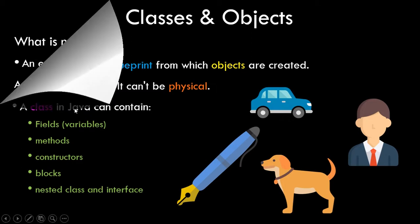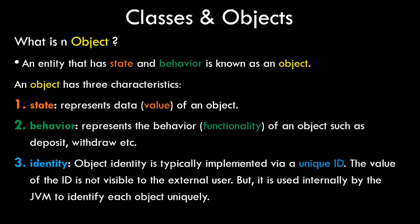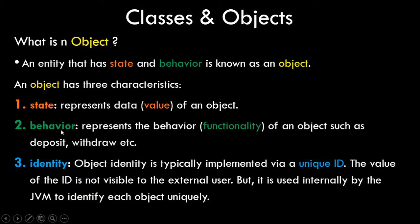Now let's see what an object is. An entity that has state and behavior is known as an object. An object has three characteristics: state, which represents the data value of an object; behavior, which represents the functionality — essentially the methods the object has; and identity, which is a unique ID not visible to external users but used internally by the JVM. We just need to focus on state and behavior.